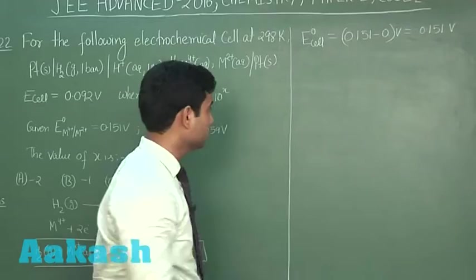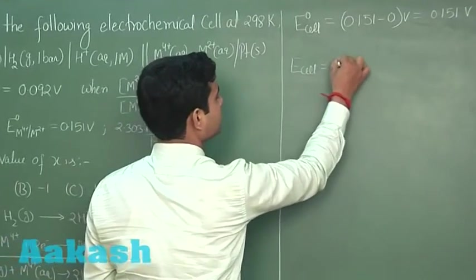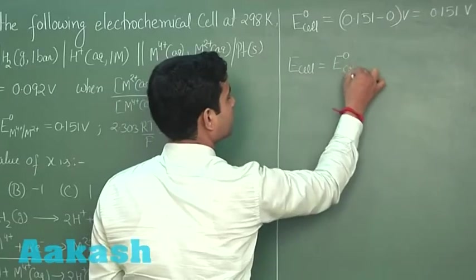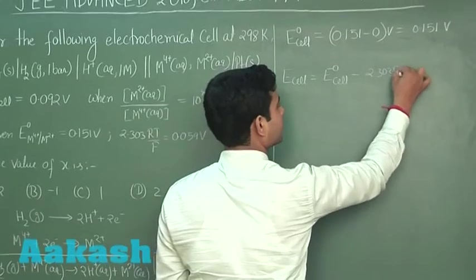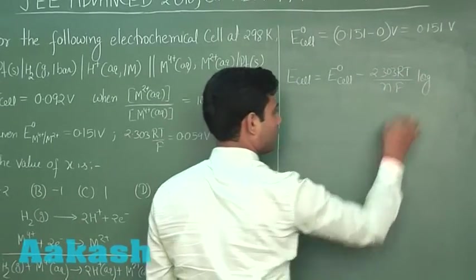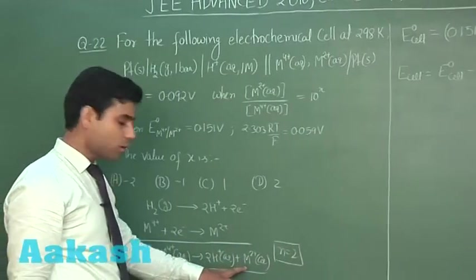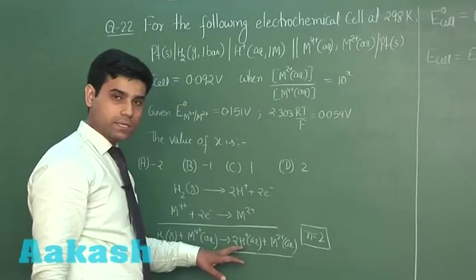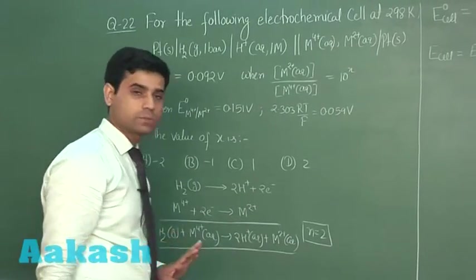Now let us apply the Nernst equation. Nernst equation is E cell is equal to E naught cell minus 2.303 RT upon nF log of Qc. For this cell, Qc will be M 2 plus ion concentration into H plus ion concentration square divided by M 4 plus into pressure of hydrogen.